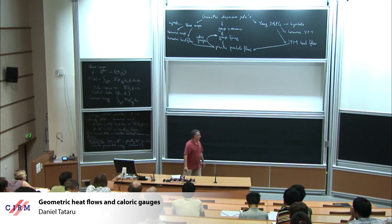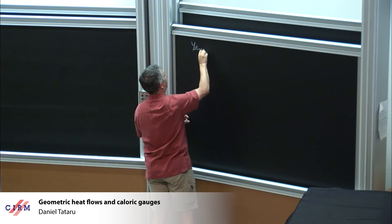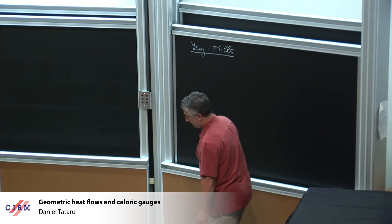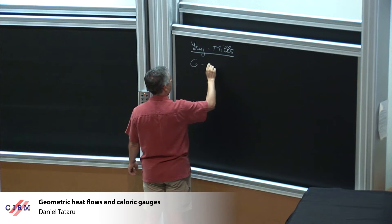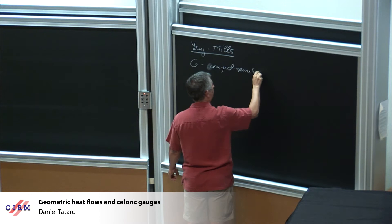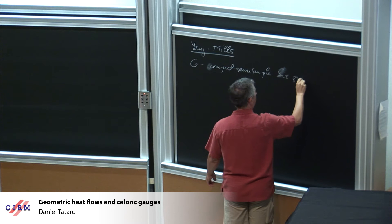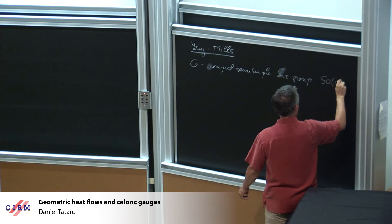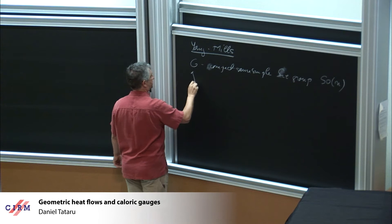But it's not this trivial gauge invariance — which has to do with the choice of coordinates — that I'm going to address. Let me stop here with the wave map equation and say two words about the Yang-Mills equation. For the Yang-Mills equation, what you have is a compact, semi-simple Lie group. If you're not so familiar with Lie groups, you should just think of SO(n), the real orthogonal matrices in R^n.